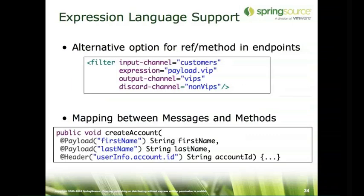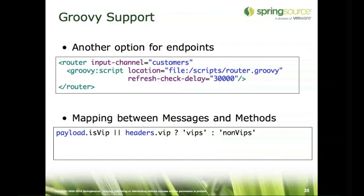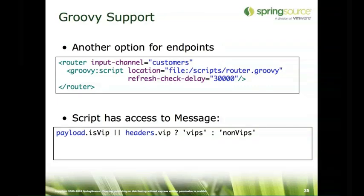Here we see a filter using a SpEL expression instead of ref and method - these are two different options: you can either point to a POJO or evaluate an expression. If it's something this simple, we recommend just using an expression. At the bottom you see that a message can actually be invoked where the parameters to that method are bound from the message contents - either payload or header - and then evaluating a SpEL expression relative to that payload or header instance. We also have Groovy support as a third alternative: either ref plus method, expression, or a Groovy script.